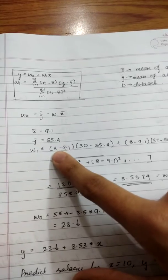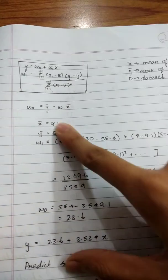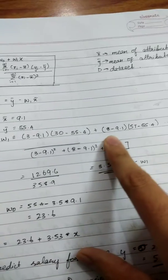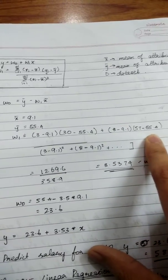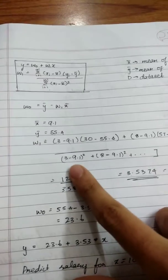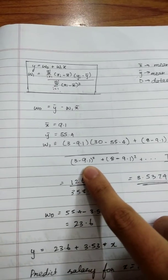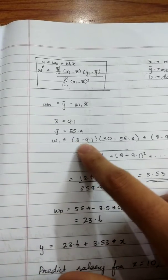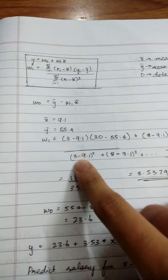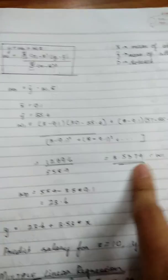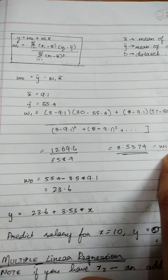You take (3 minus 9.1) times (30 minus 55.4) plus (8 minus 9.1) times (57 minus 55.4), and so on. This is a long calculation, use your calculator. Divide by the summation of (Xᵢ minus X̄) squared. You get the value of W₁ as 3.53.